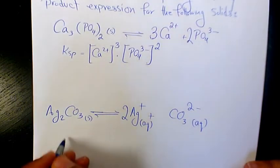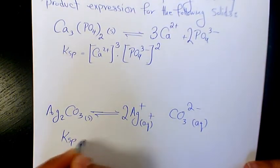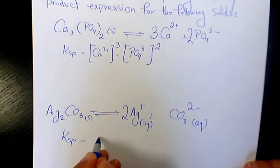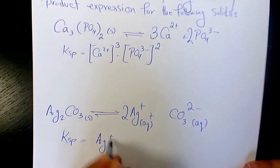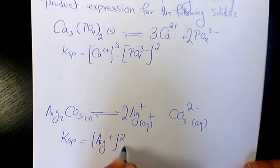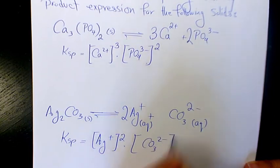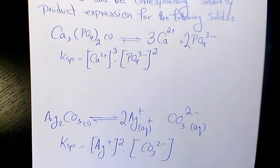Ksp will be Ag to the power of two times carbonate concentration. That's how we write the dissolution reactions and solubility product expressions.